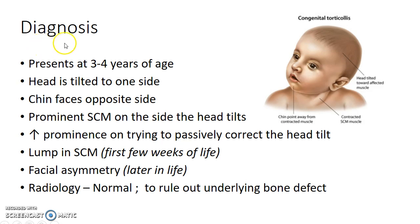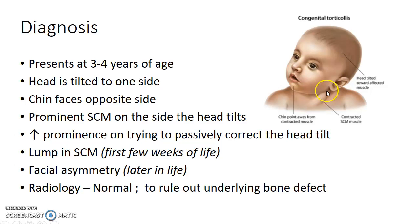Now let us see about the diagnosis of congenital Torticollis. The child usually presents at 3–4 years of age. The head is tilted to one side and the chin faces the opposite side. A prominent sternocleidomastoid can be seen on the side the head tilts, with increased prominence on trying to passively correct the head tilt. When the child presents in the first few weeks of life, a lump can be made out in the sternocleidomastoid muscle. Facial asymmetry can be present when the child presents later in life.